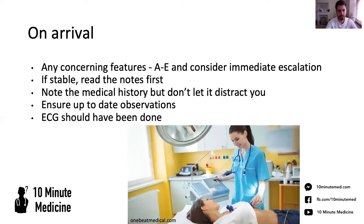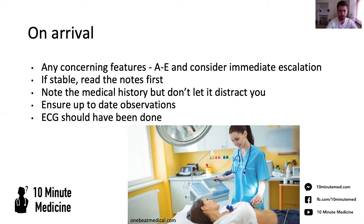When you get to the ward and you're discussing what's been going on, you want to see if there are any concerning features. If their observations are very off — low blood pressure, very fast heart rate — you're going to want to jump in with an A to E a lot earlier than if they're stable and looking comfortable. If that's the case, go and read the notes because you can get a lot of information. If they've had five PEs in the past, you can't be sure this is a sixth, but it will certainly help when you escalate and hand over.